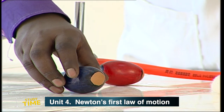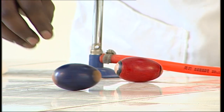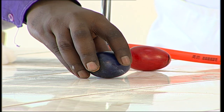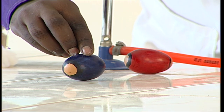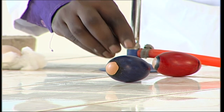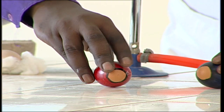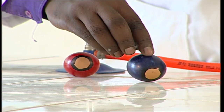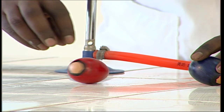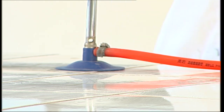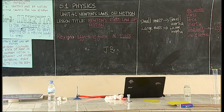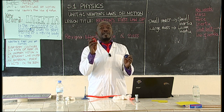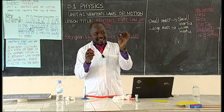Now let's look at the blue egg. I'll repeat the same procedure — spin it, stop it, remove the hand. When we spin the blue egg and stop it, it stops also. So the red egg continues to spin after being stopped, while the blue egg stops completely. Which of these two is the raw egg?